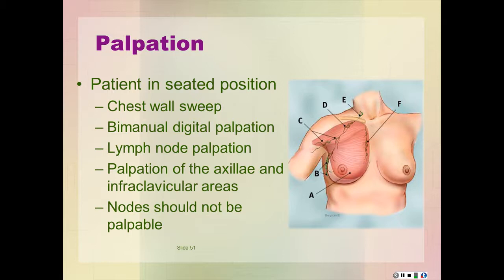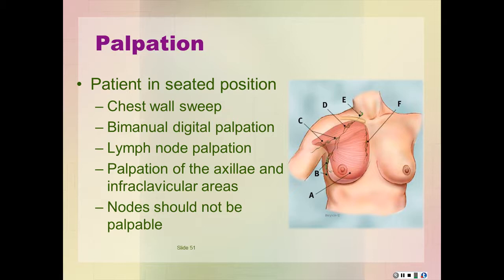Palpate the supra- and intraclavicular areas for the presence of enlarged nodes. Hook your fingers over the clavicle and rotate them over the entire supraclavicular fossa. Have the patient turn their head toward the side being palpated and raise the same shoulder, allowing your fingers to reach more deeply into the fossa. Have the patient bend the head forward to relax the sternocleidomastoid muscle. These nodes are considered to be sentinel nodes — Virchow nodes — so any enlargement is highly significant. Lymph nodes are not usually palpable in a healthy adult, so if you find one, that is a significant finding.